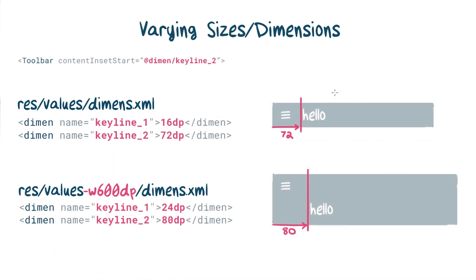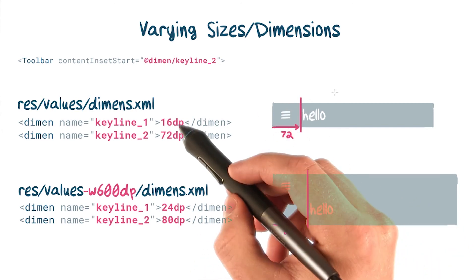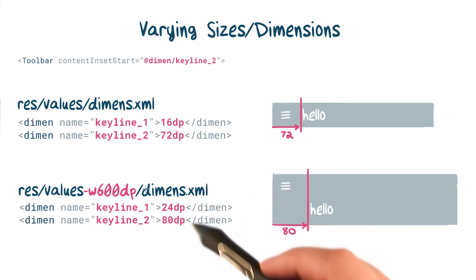And hey, remember key lines from lesson three? On smaller devices, the standard key lines are 16 dip and 72 dip. But once you get to larger sizes, you can start using the standard tablet key lines of 24 dip and 80 dip.